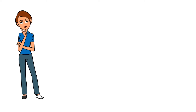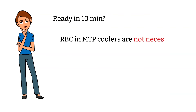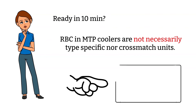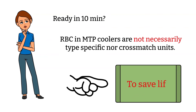I can see a question arising: if a cooler can be ready within 10 minutes in an MTP situation, then why does it sometimes take an hour to get cross-matched red blood cells ready for a patient? Well, red blood cells in MTP coolers are not necessarily type-specific or cross-matched units — we may not even have the patient's blood type at that time. It is better practice in non-emergency situations to give patients plasma-compatible and cross-matched blood products. However, in an emergency situation, safety of life is first and we would be dealing with the complications later.